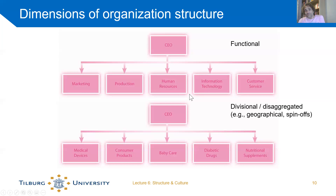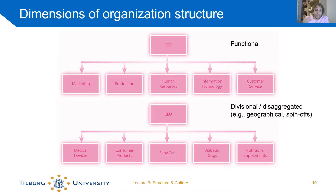These are simple examples of structure. In reality, organization charts are much more hierarchical — you have a CEO, then general managers, then functional heads like a head of marketing with everyone in marketing below them, and marketing itself may be subdivided into regular marketing, social media marketing, after-sales service, and so on. So usually it's much more complex than these simple examples.